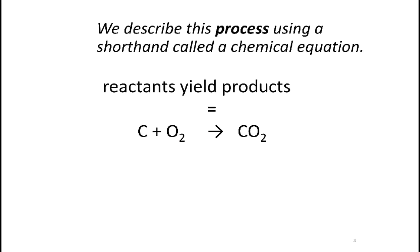We describe the process of creating or breaking bonds using a shorthand notation called a chemical equation. The ingredients are called reactants. Those are the things that are going to be combined, react together. And what comes out at the end of the process is called a product. In this example, we have one atom of carbon and one molecule of molecular oxygen.